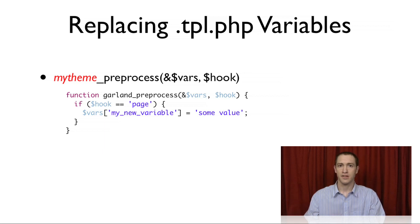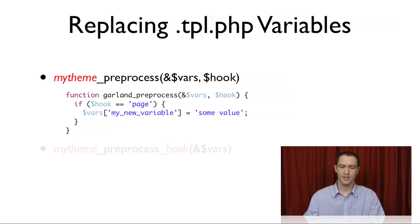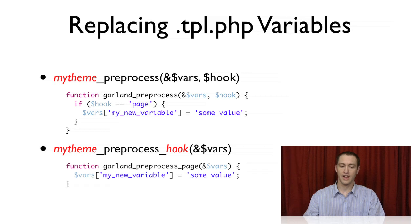Generally speaking, the name of the hook is also going to be the name of the tpl.php file that's getting called. For example, this particular example would affect page.tpl.php and create a new variable called my_new_variable with some value. An alternative approach: you can also use the name of your theme underscore preprocess underscore the hook name — a shorthand way of breaking up that single large function into many smaller functions. So garland_preprocess_page would have the exact same effect as the garland preprocess function above, without the if statement, setting up a variable specifically for page.tpl.php.